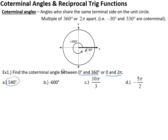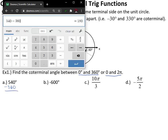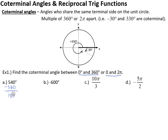Our first one is given in degrees, so I want the co-terminal angle that would fall between 0 and 360. Our number is clearly too big — we are too big to be in this range. So we need to subtract 360, go back around the circle, subtract 360, and we get an answer of 180 degrees. We check: is my answer in this range? Yes. So the co-terminal angle between 0 and 360 would be 180 degrees.